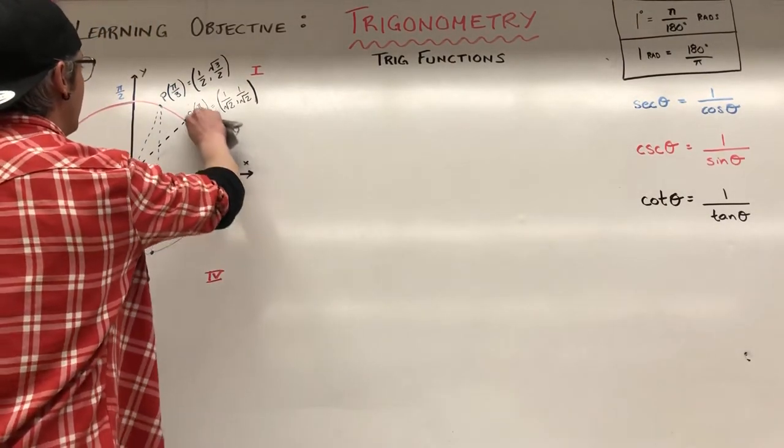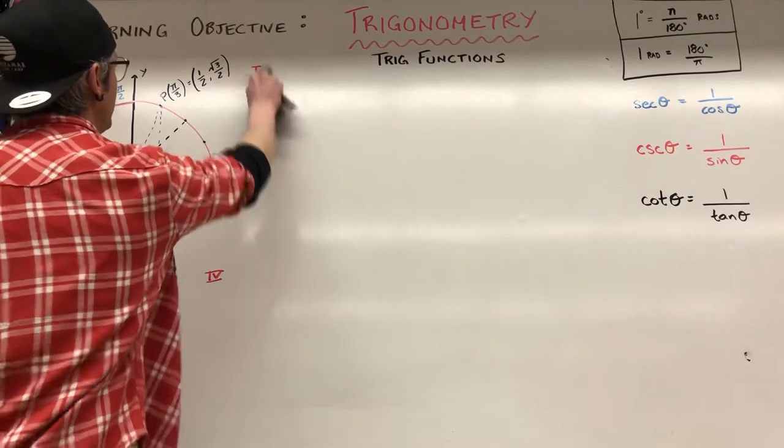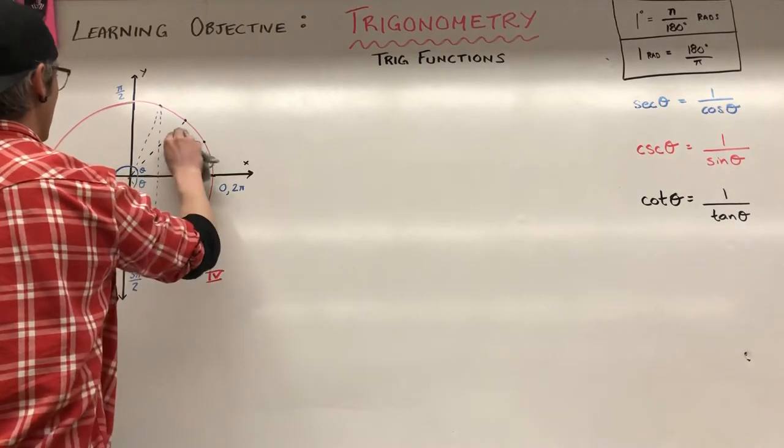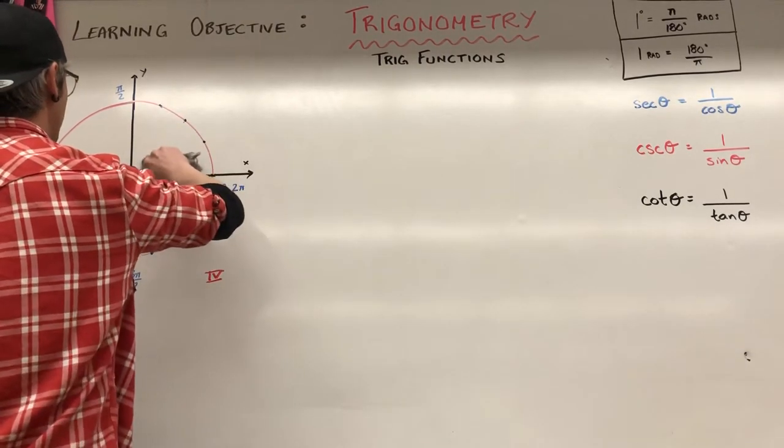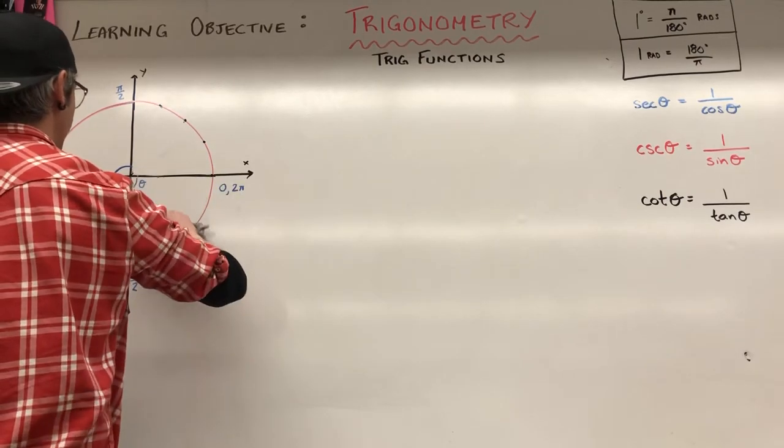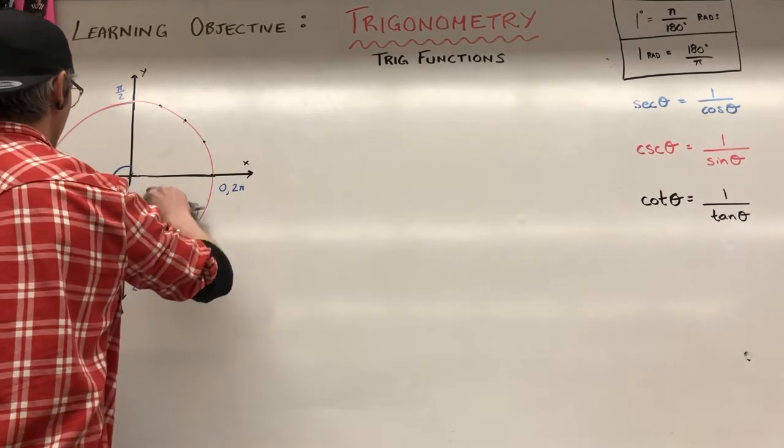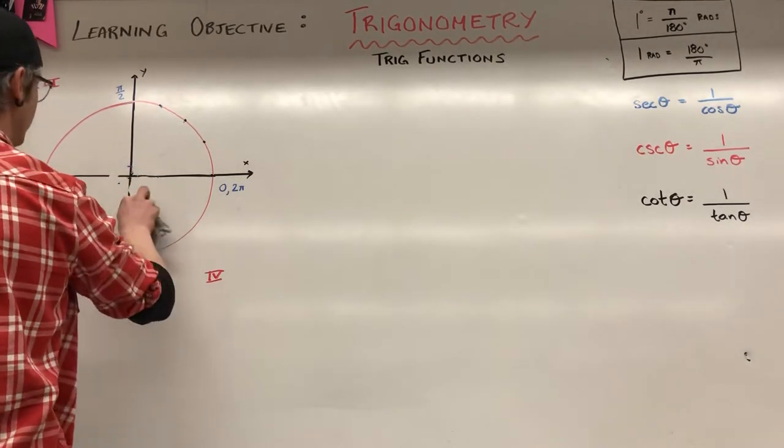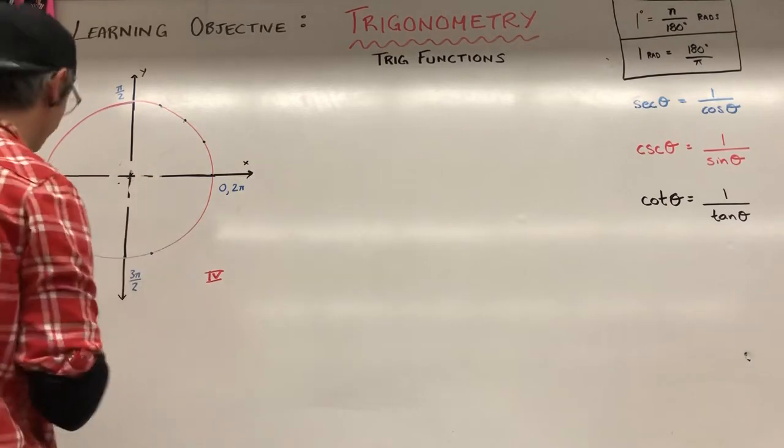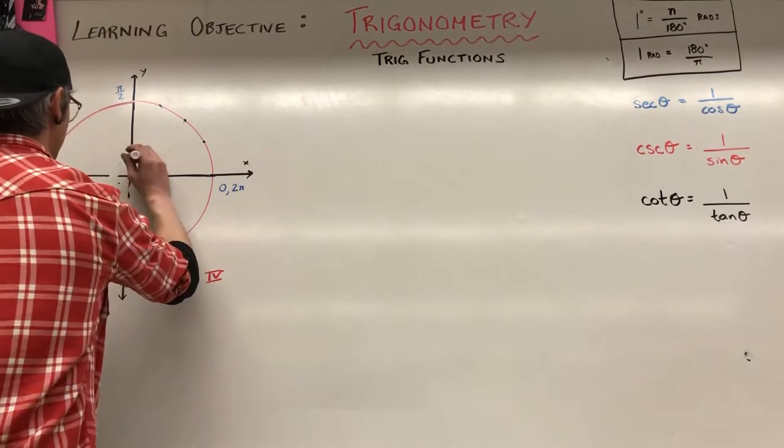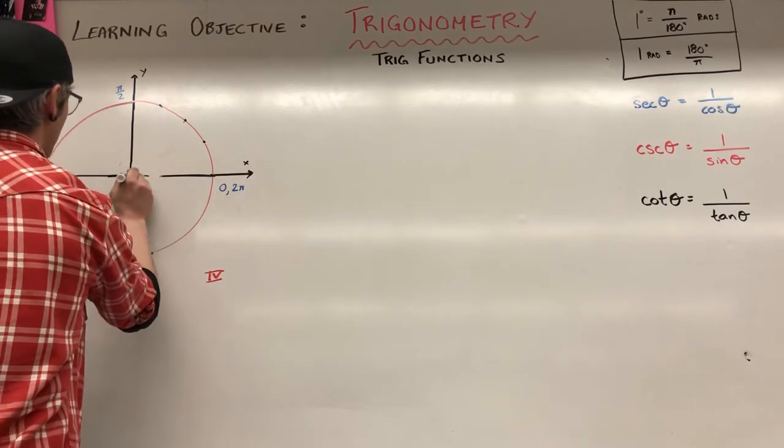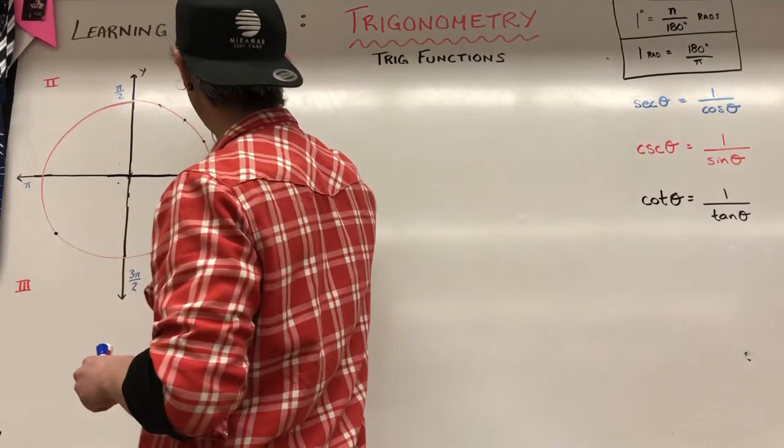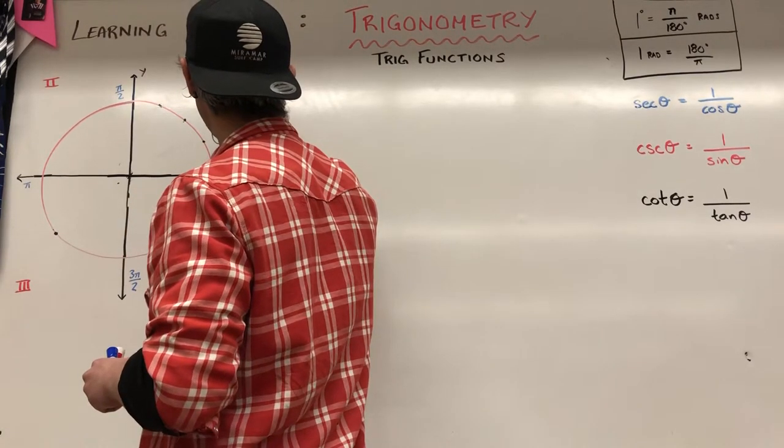So understanding the unit circle and how sine and cosine change as we move around the circle sets the stage for visualizing that in a different manner. Instead of talking about it, let me just show you. So basically we know that at any point on our unit circle, the coordinates are cos of theta, sine of theta, right?